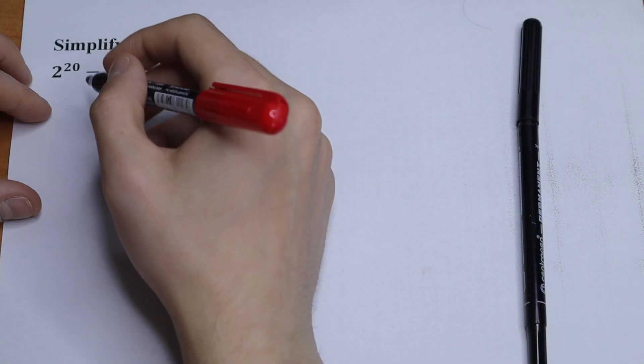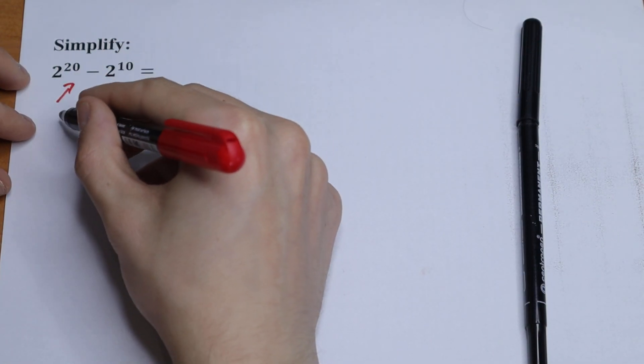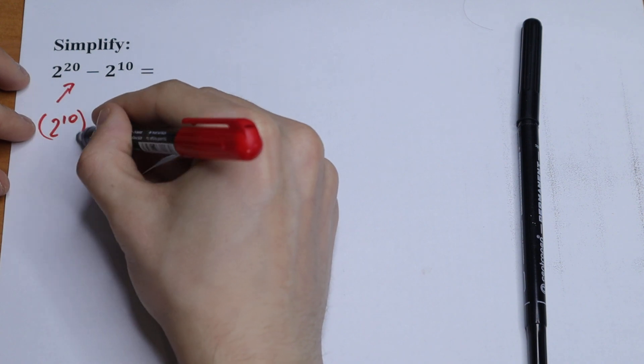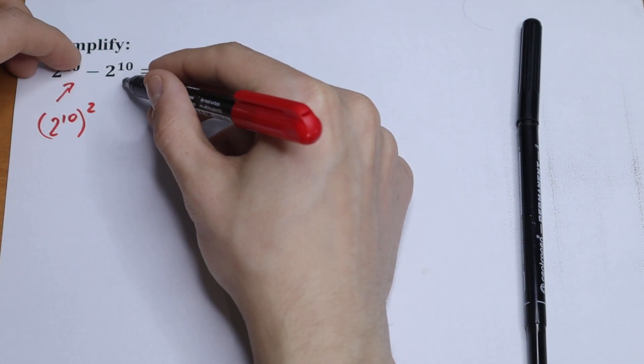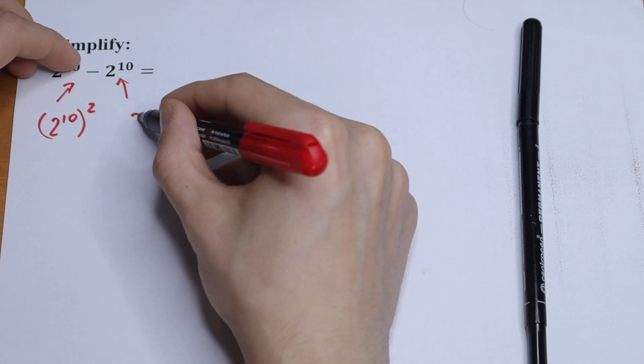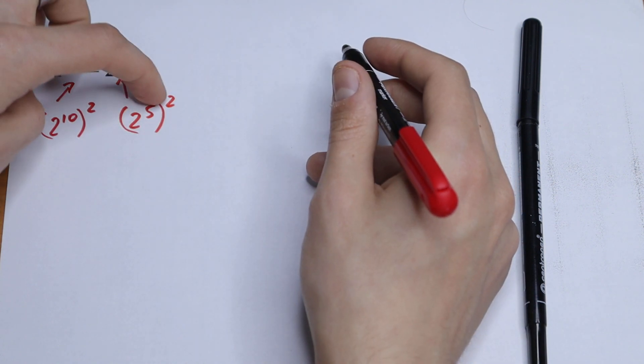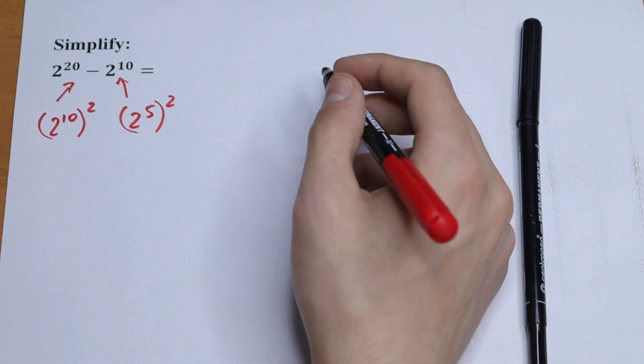We can write 2 to the 20th power as 2 to the 10th power squared, and this 2 to the 10th power we can write as 2 to the 5th power squared. If we multiply, we will have the same as right here.